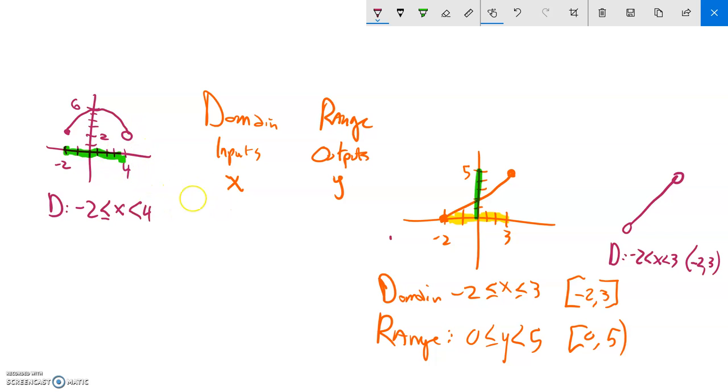Open circle, which is strictly less than open circle four. Or if I wrote that in set notation, it'd be a hard bracket negative two, including negative two all the way up to four, soft bracket, because four is not included in the solution.